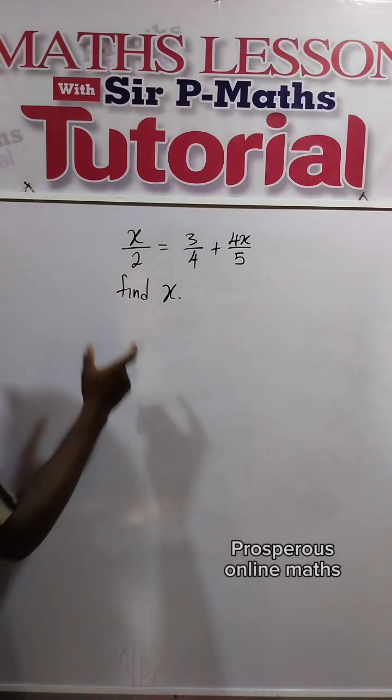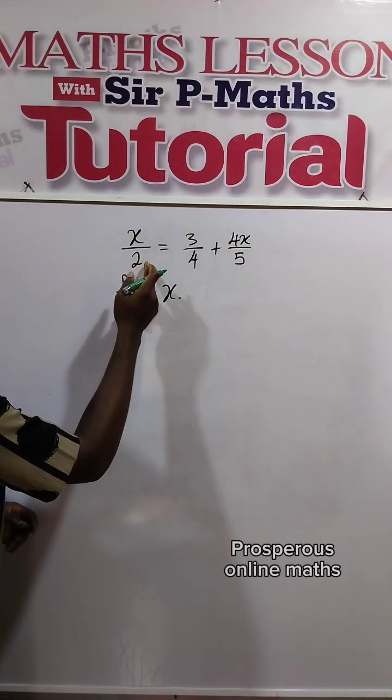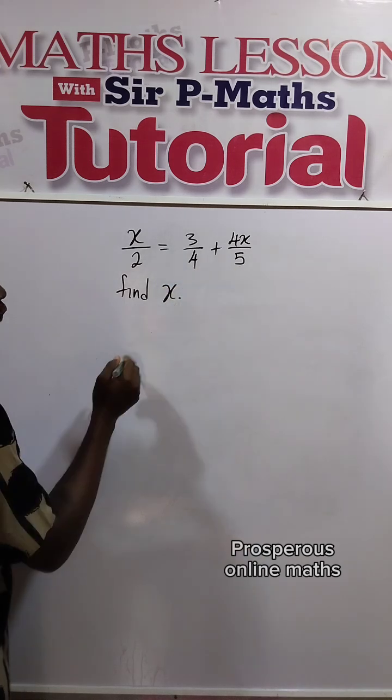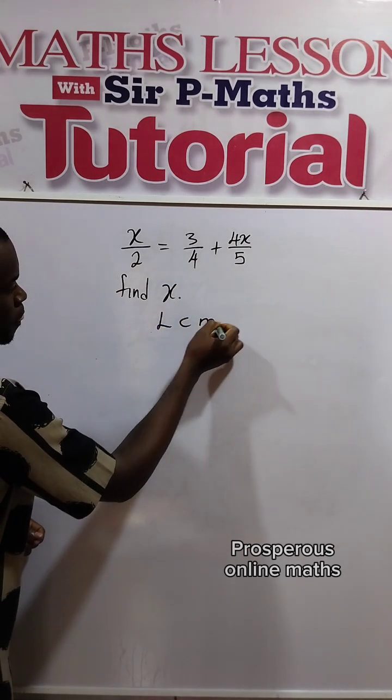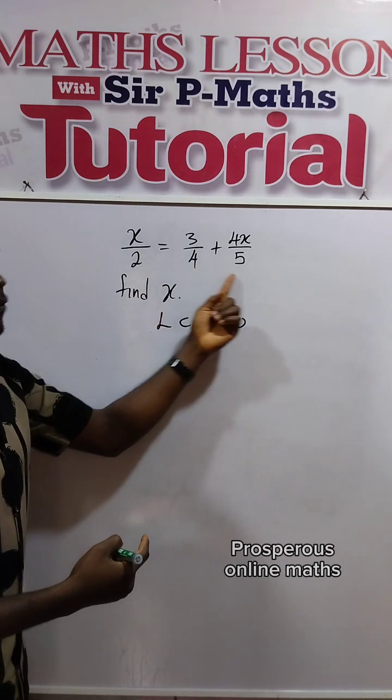Now to simplify and find the value of x, the first thing we need to do is to find the LCM of 2, 4, and 5, which is 20. Right? 20 is the smallest number that 2 and 4 and 5 can divide.